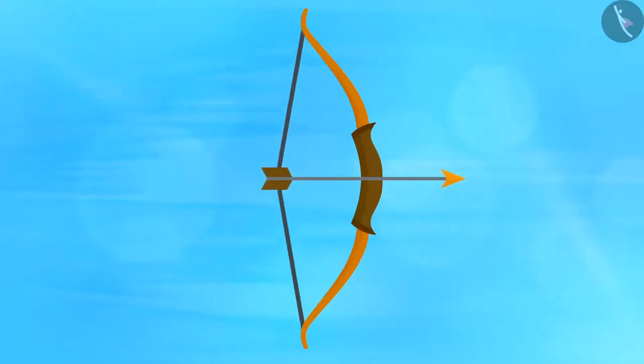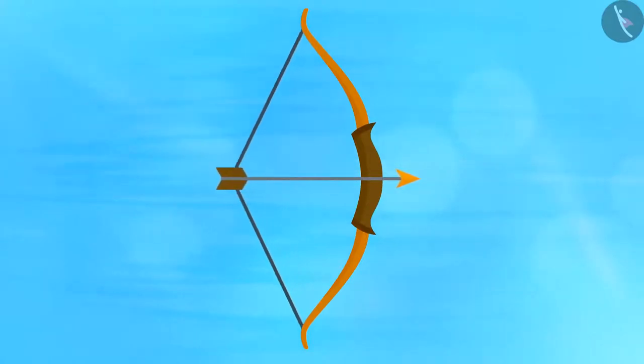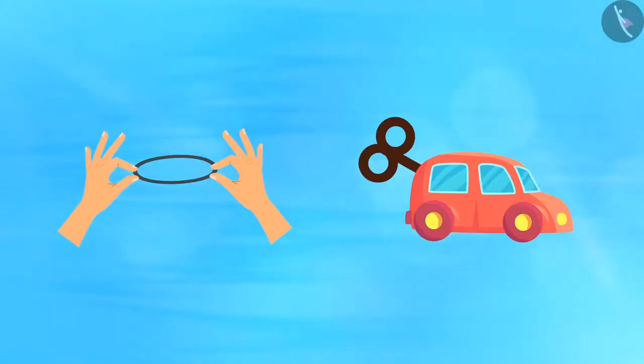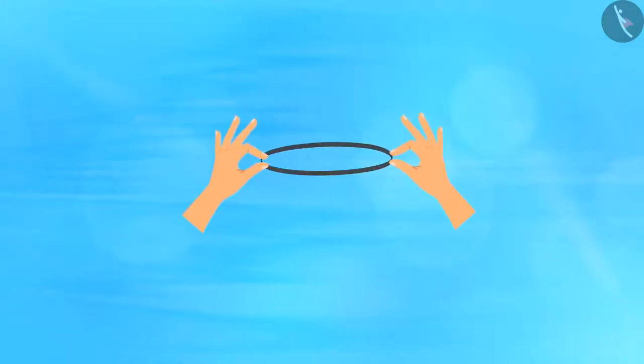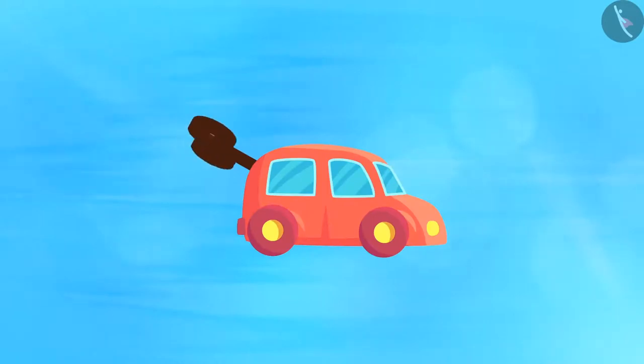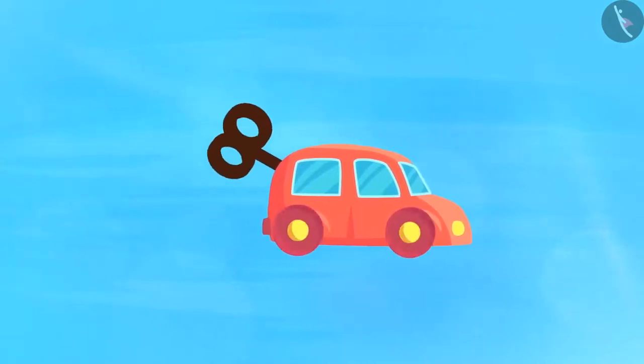When an object doesn't use the energy transferred to it to cause any change in its speed or velocity, then it is stored by the object in the form of potential energy. You transfer the energy when you stretch the rubber band or wind up the key of the toy car. When you stretch the rubber band, the work done by you in stretching it is stored in it as potential energy. And when you wind up the key in the toy car, which compresses the spring inside it, the work done in compressing the spring is stored as its potential energy.